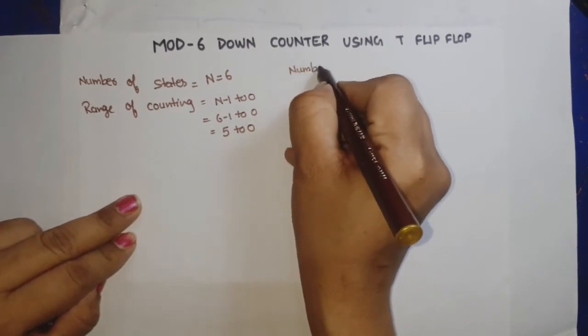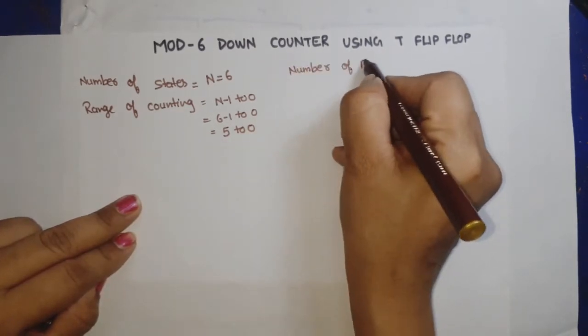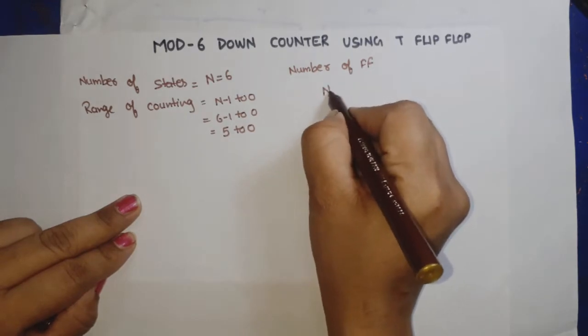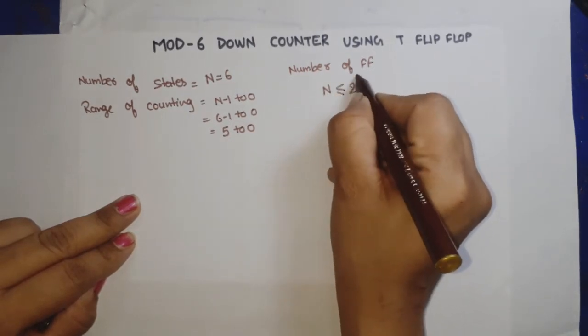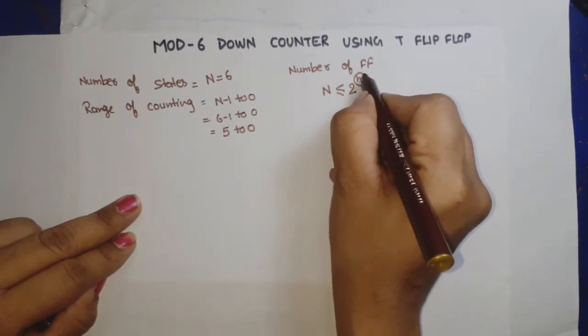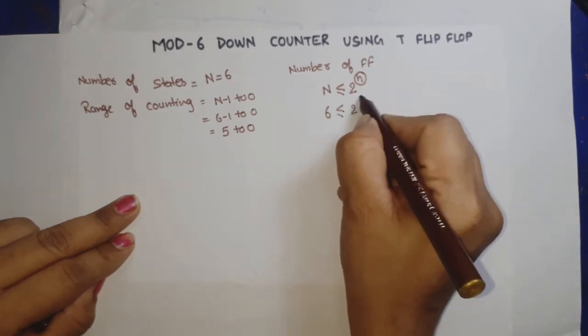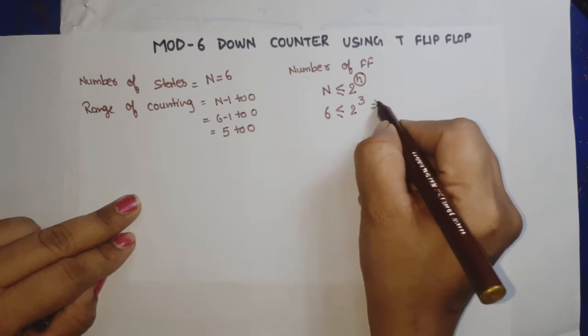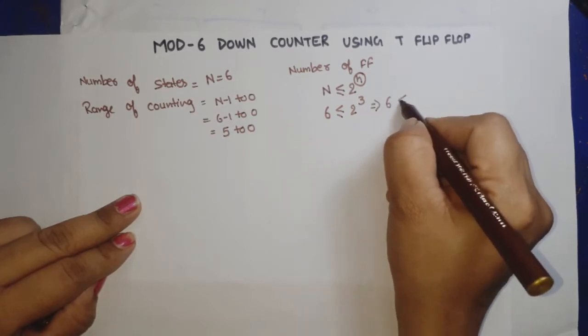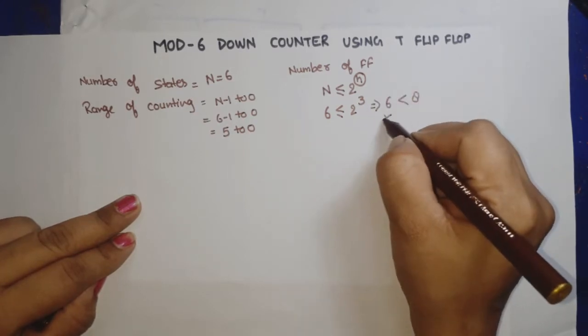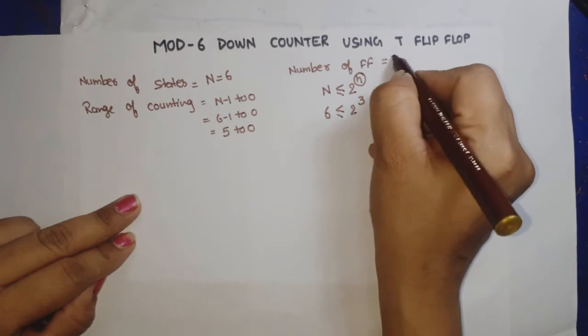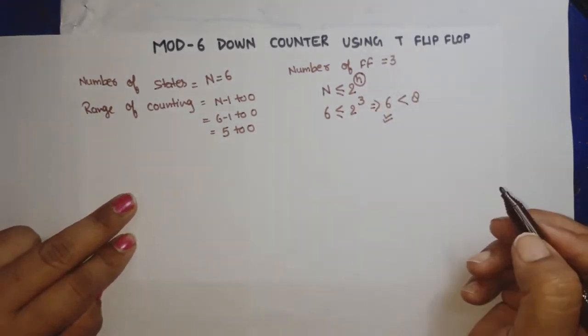Now how many flip-flops are required? When we find the number of flip-flops, we check the condition N should be less than or equal to 2 raised to power n, where small n is the number of flip-flops. Capital N is 6, less than or equal to 2 raised to power 3, which equals 8. The condition is satisfied, so 3 flip-flops are required.